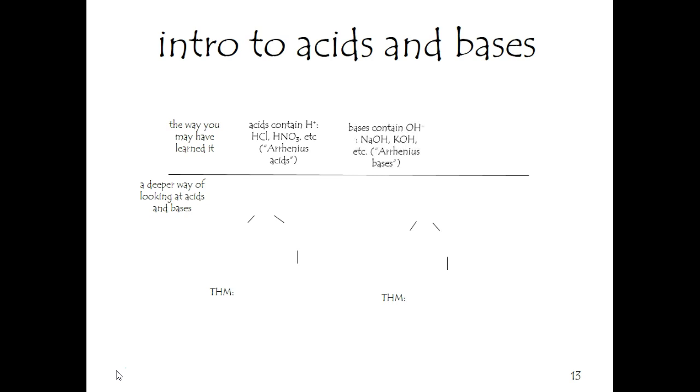A base contains OH- and the same rules apply. It has to actually be in solution and generate the OH- in solution, has to dissociate in order to be an Arrhenius base. Sodium hydroxide, potassium hydroxide are completely dissociated and are good examples of Arrhenius bases.